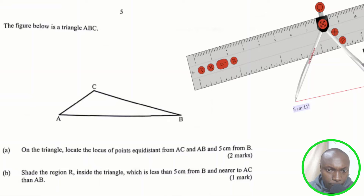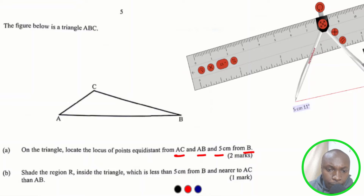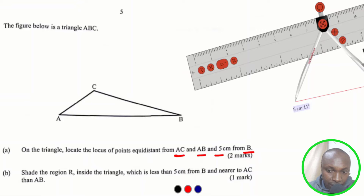Let's go to the first part of the question. Part A: you're supposed to locate the locus of points equidistant from AC and AB and 5 cm from B. The locus of points equidistant from two given sides is the angle bisector locus. Since the two given sides are AC and AB, we shall bisect the angle between them — that is, angle CAB or angle BAC.